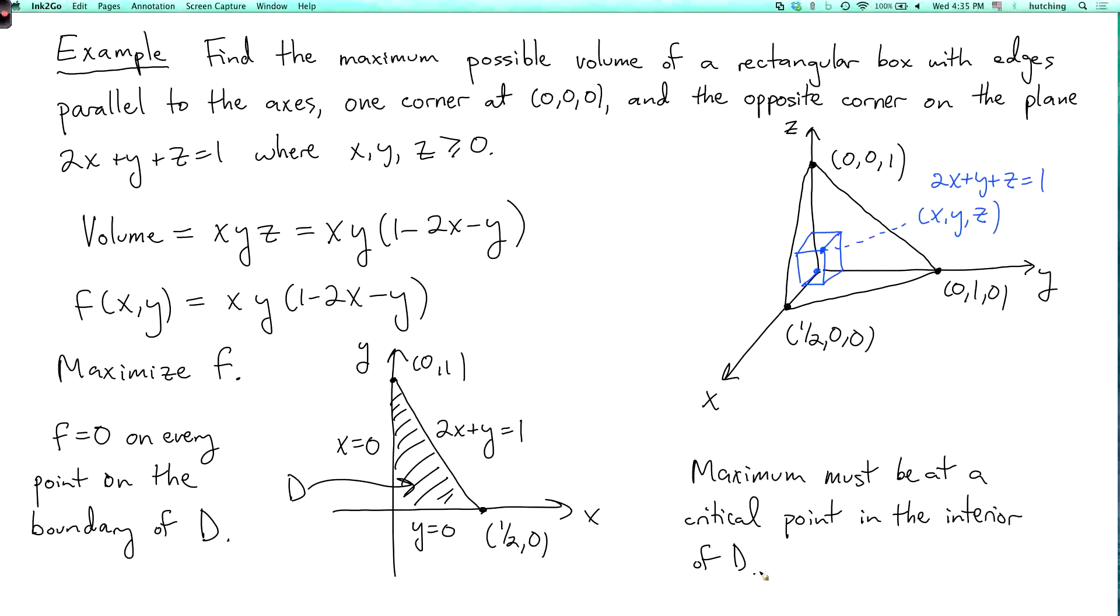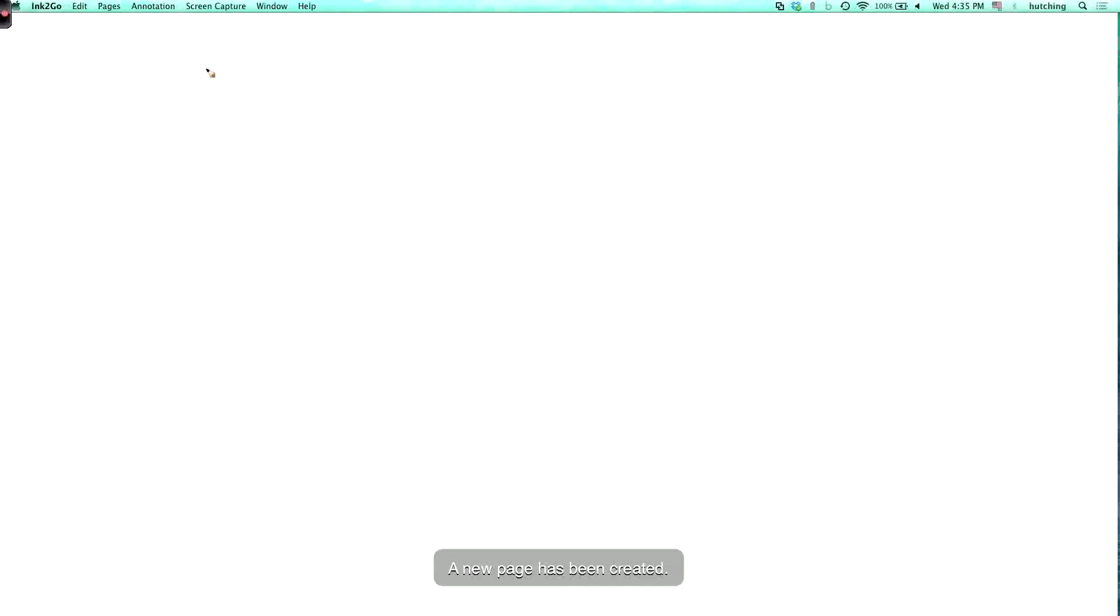Okay, so let's find the critical points. So let's write the formula for f again. So f(x, y) equals x times y times (1 minus 2x minus y).